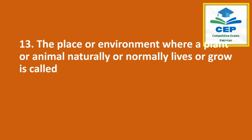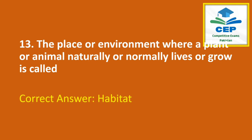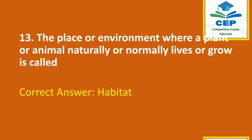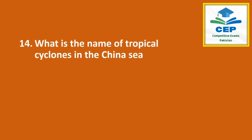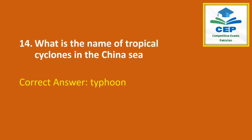The place or environment where a plant or animal naturally or normally lives or grows is called habitat. What is the name of tropical cyclones in the China Sea? The answer is typhoon.